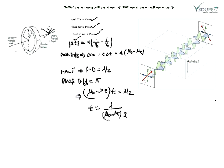This formula applies for a negative crystal, where μ₀ is greater than μₑ. For a positive crystal such as quartz, the thickness formula becomes t = λ / [2(μₑ − μ₀)], which applies when μₑ is greater than μ₀.